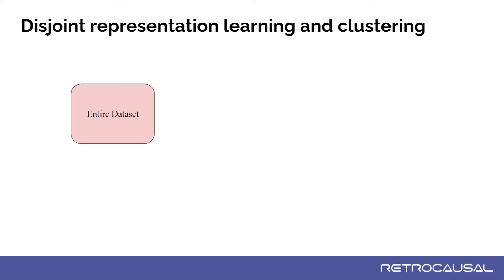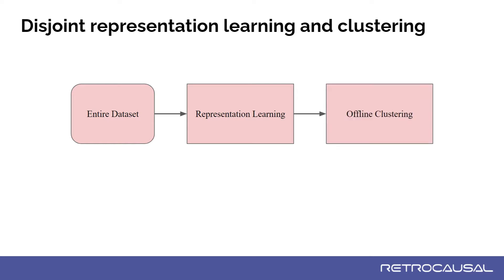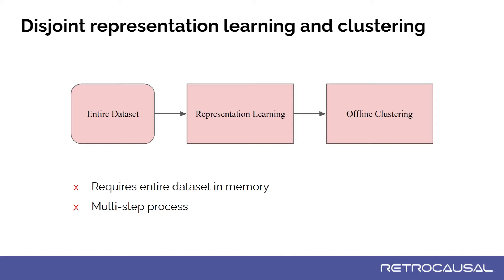Previous approaches for unsupervised activity segmentation often treat representation learning and clustering as disjoint steps. They first learn representations guided by a pretext task and then compute the learned representations for the entire dataset, which are then passed to the clustering module. The downsides are twofold: these approaches require learned representations for the entire dataset to perform offline clustering, and there is no feedback between clustering and representation learning, which leads to incoherent clusters.